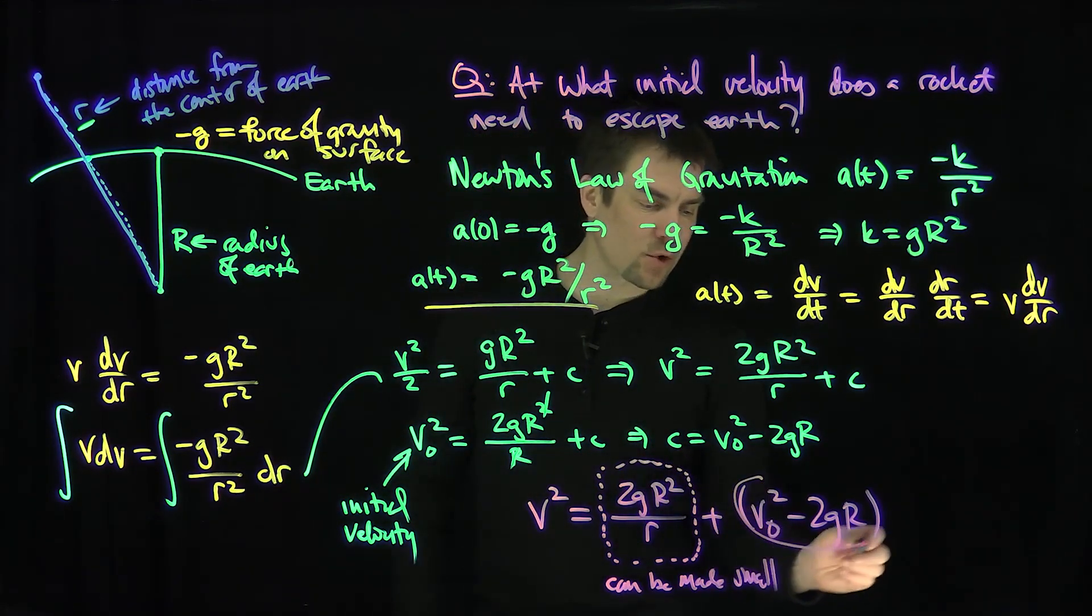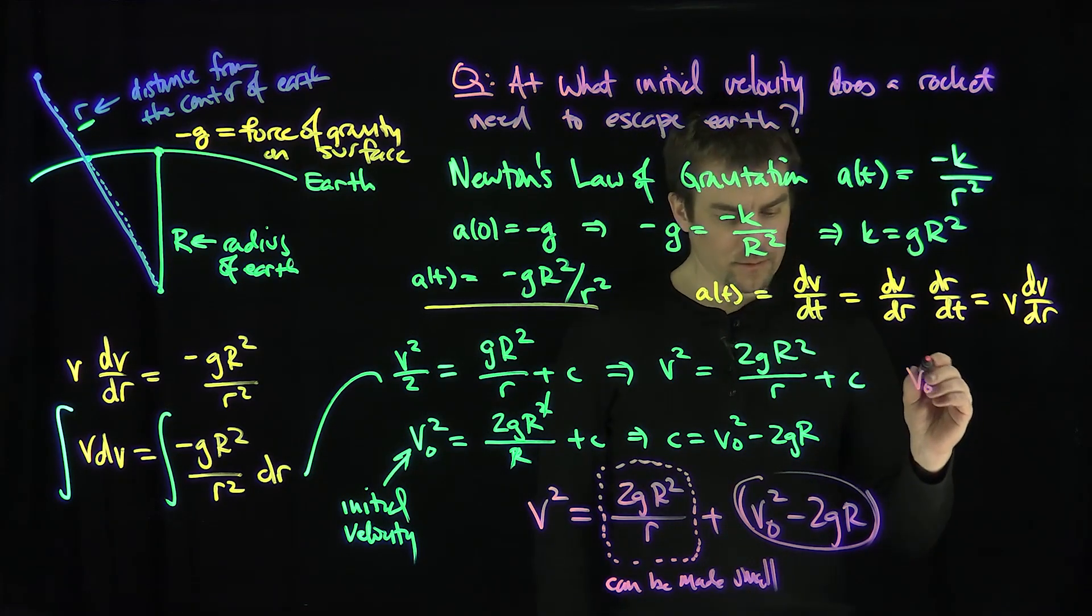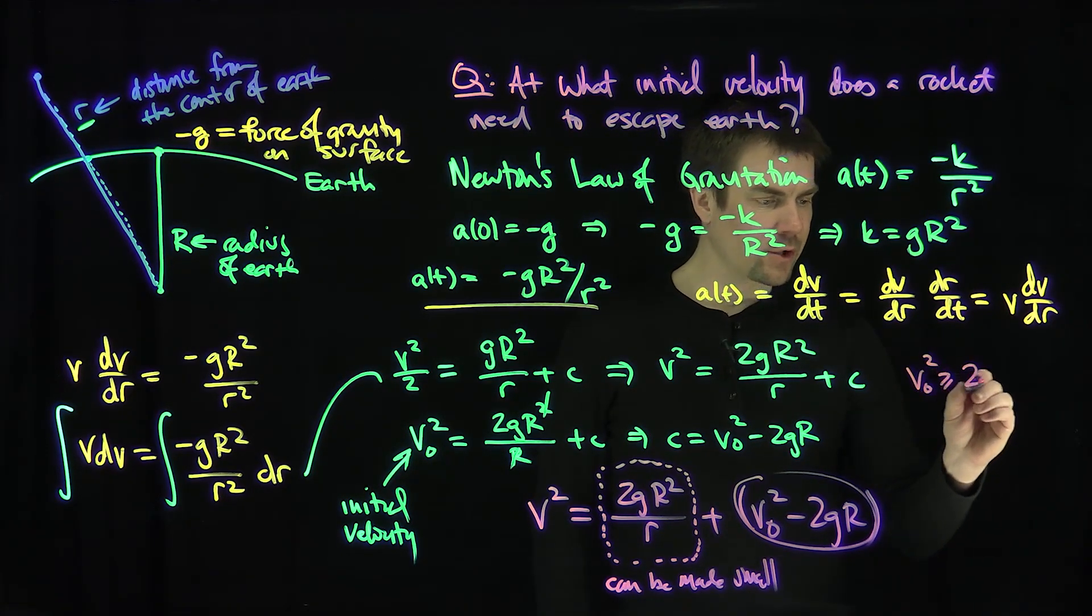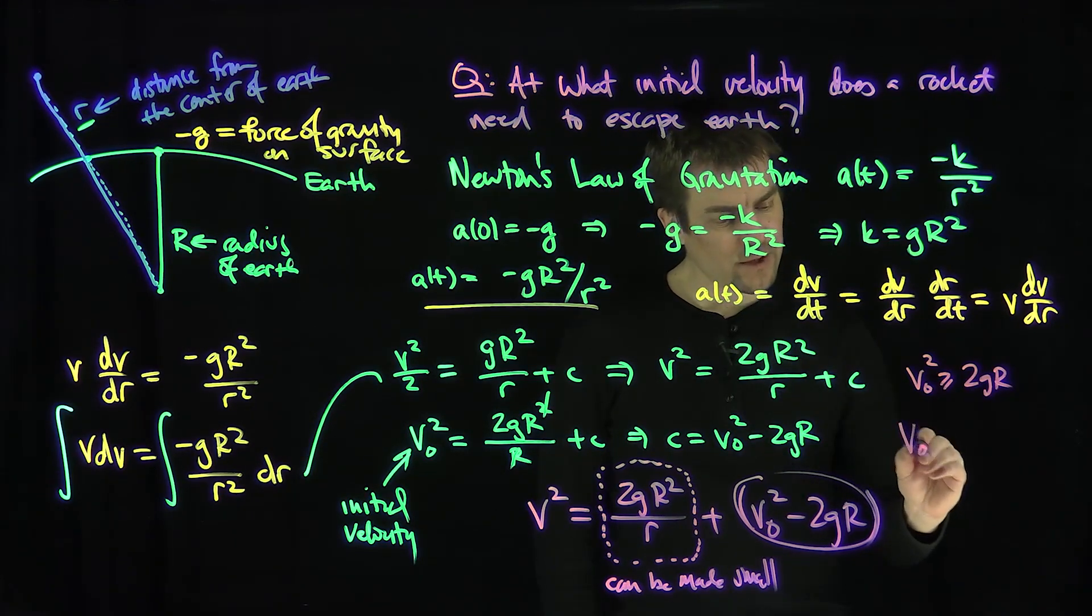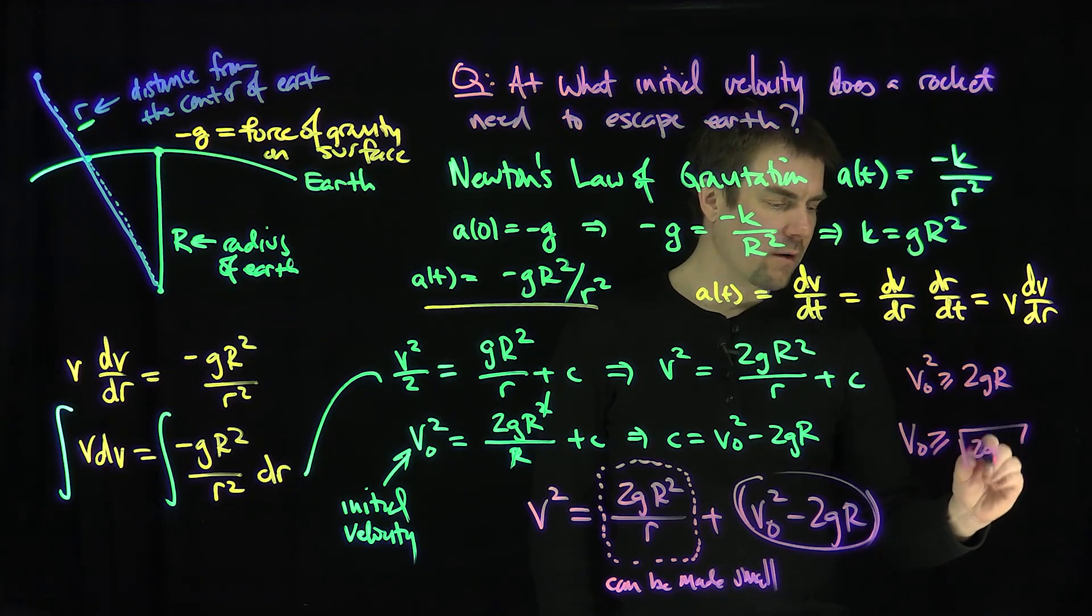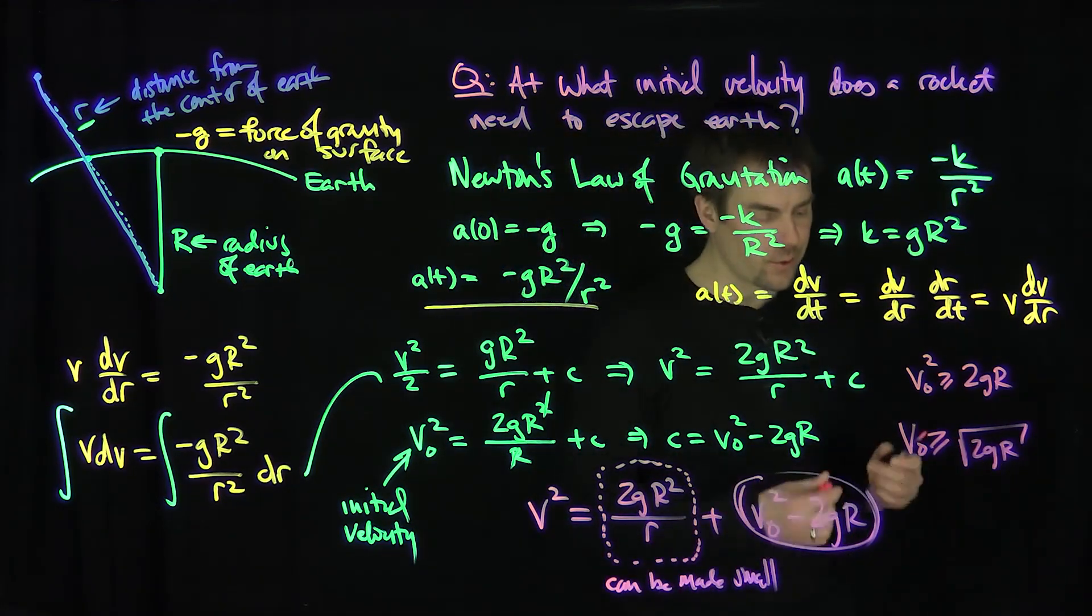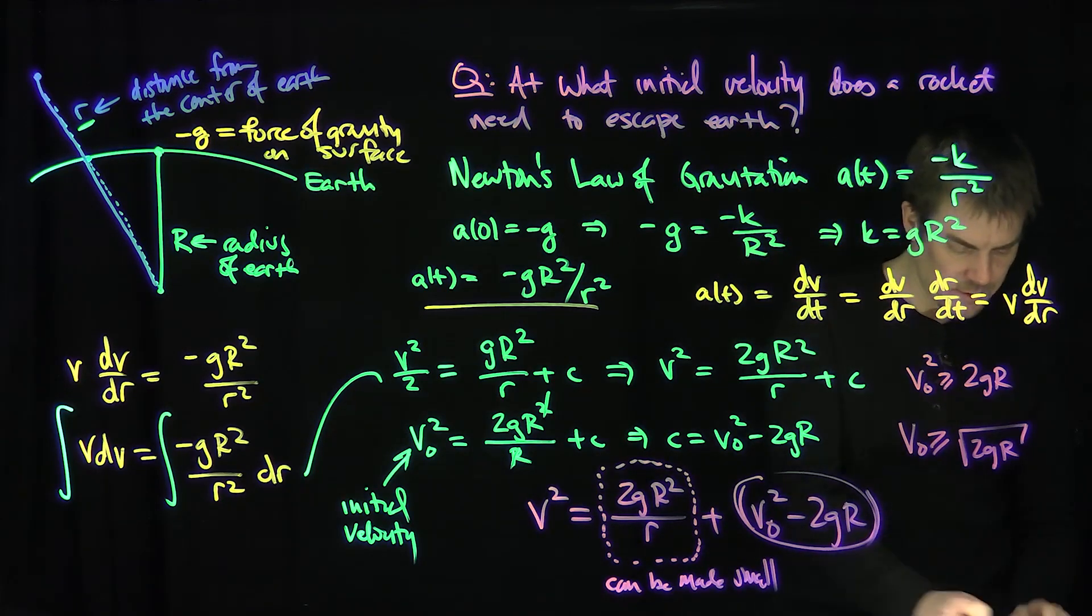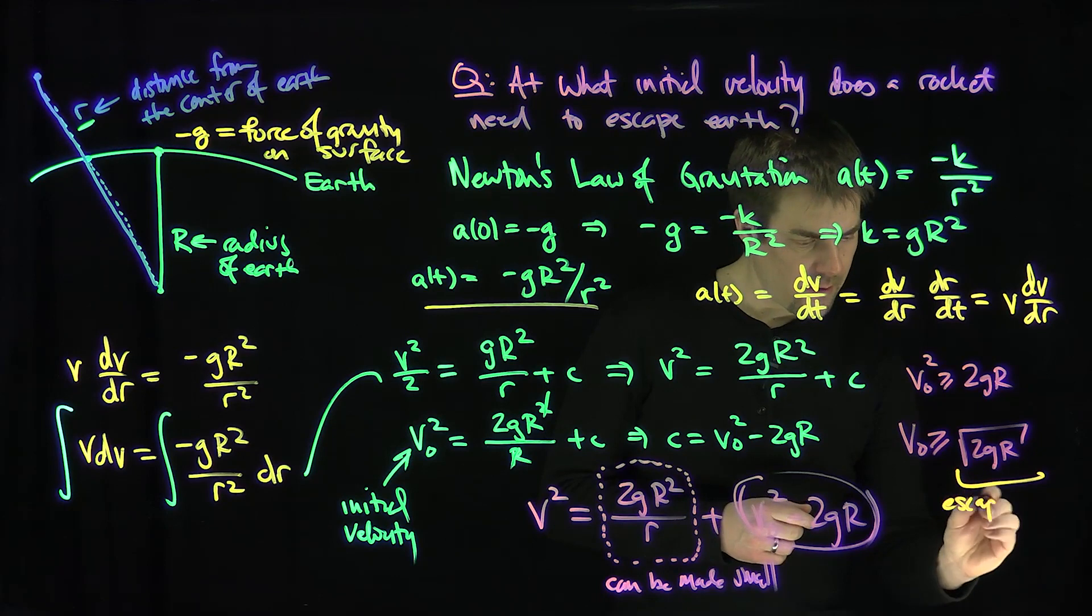So the condition to escape is that this quantity has to be greater than or equal to 0. So I need v0 squared to be bigger than or equal to 2gR. And therefore, v0 has to be bigger than or equal to the square root of 2gR. And so this quantity is referred to as the escape velocity.